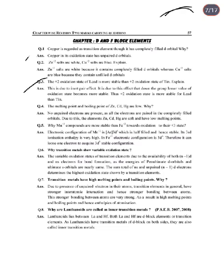Next: The +2 oxidation state of lead is more stable than the +2 oxidation state of tin. This is due to the inert pair effect. Down the group, the lower oxidation state becomes more stable, so +2 is more stable for lead than for tin.